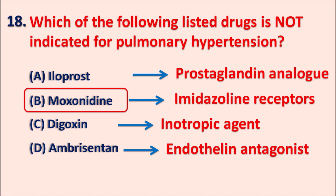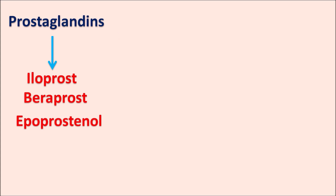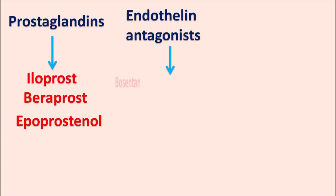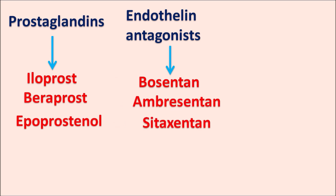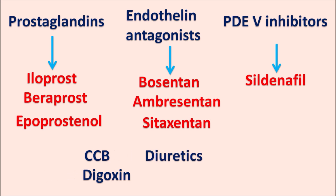Drugs used for pulmonary hypertension include: prostaglandins such as iloprost, beraprost, and epoprostenol; endothelin antagonists like bosentan, ambrisentan, and sitaxentan; and phosphodiesterase type 5 inhibitors such as sildenafil. These are all vasodilators used in pulmonary hypertension. Direct vasodilators like calcium channel blockers cannot be used. Digoxin is used as an inotropic agent to improve cardiac output. Diuretics cannot be used to decrease pulmonary hypertension.